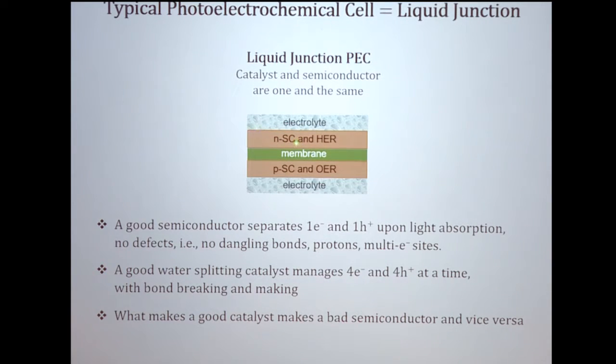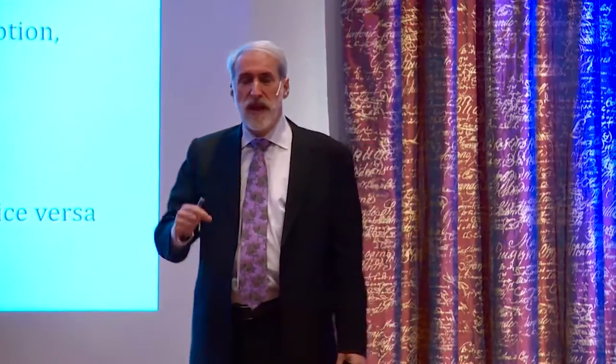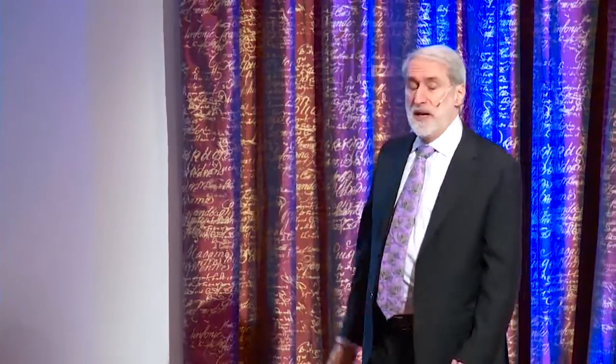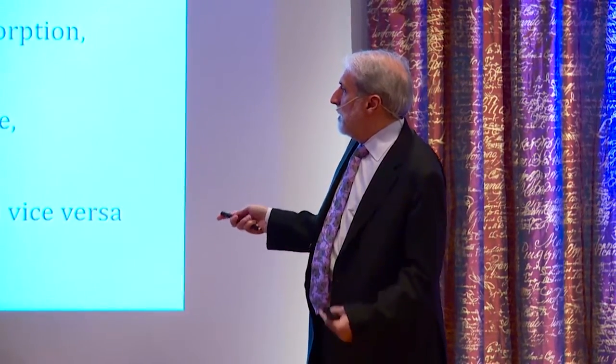What a liquid junction is, is you design a semiconductor that absorbs the light, and it also does the catalysis. So titanium oxide would absorb light, and then do the catalysis of water splitting to O2. The problem with that approach is a good semiconductor only wants to make one hole and one electron. As a matter of fact, if it tries to make more than one hole and one electron, that leads to defect sites where the semiconductor loses efficiency. I just showed you that a good water splitting catalyst has to do proton-coupled electron transfer with four electrons and four protons. So the last thing you want to do with a semiconductor is have it do chemistry. So what makes a good catalyst makes a bad semiconductor and vice versa.